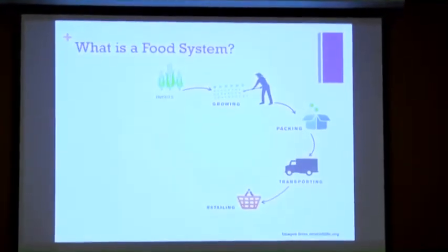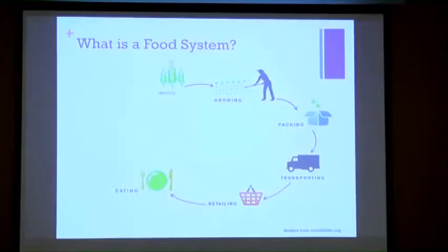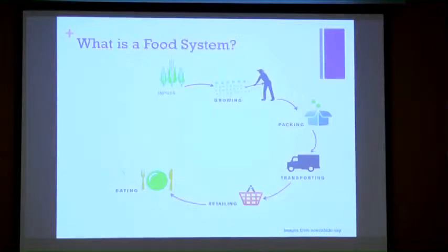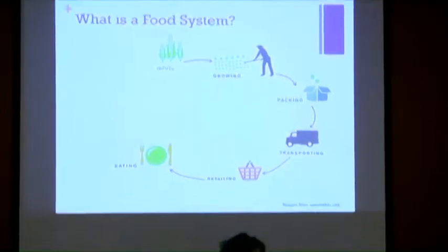So that gets us through the growing, packing, processing, transporting, and retailing. The next major part is eating — consumers. The big thing we think about here is hunger, food security, and food access: are we growing enough food, is it high-quality nutritious food, and is it available and accessible to everyone? Not just physically available at a local grocery store, but also at a price people can afford.